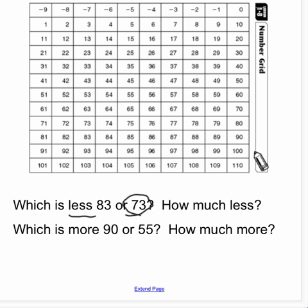My job now is to determine how much less is this. What I want to do is find both of the numbers on the number grid. I want to find 83 and I also want to find 73. If I go up to my number grid, here is 83 and here is 73.